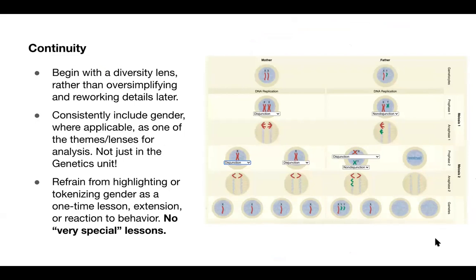Continuity helps not only include more students, but also reduces the cognitive load to make learning a lot easier. It's a lot simpler to build up new ideas instead of revising an imprecise shortcut. My own students have asked the obvious: why tell us there's only XX and XY when I have a friend right next to me with a naturally occurring karyotype involving non-disjunction?